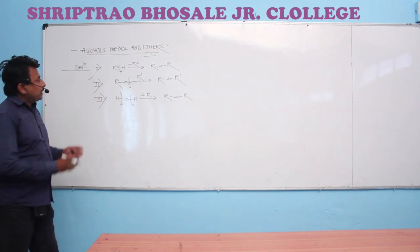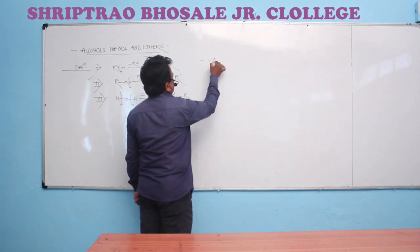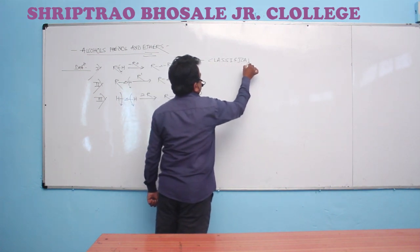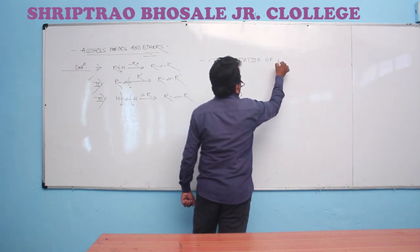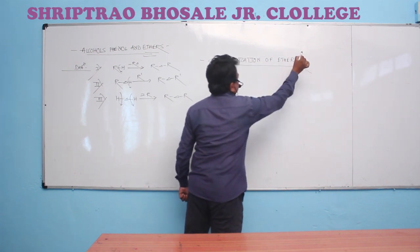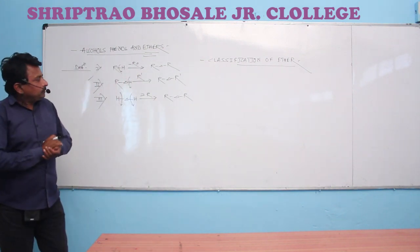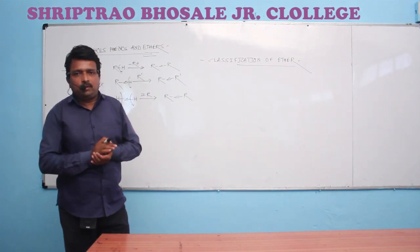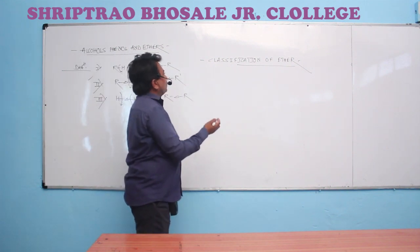Now we are going over the classification of ethers. In ether, the divalent oxygen atom is attached to the same or different alkyl groups. Ether will be classified into two types.